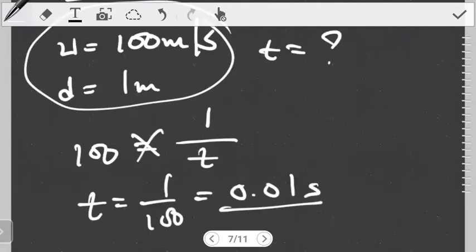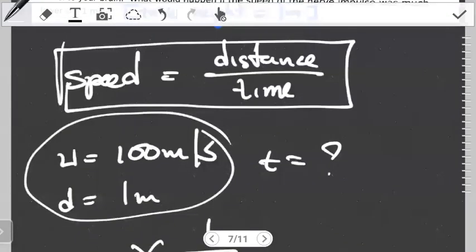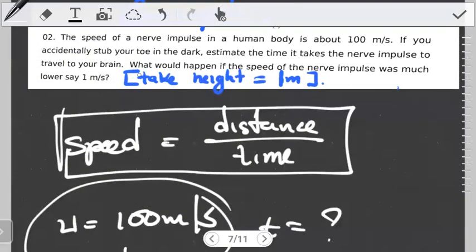So this is how long it takes. We won't really get into the biology. Let's look at the next one. For the second part they say, what would happen if the speed of the nerve impulse was much lower, say one meter per second?